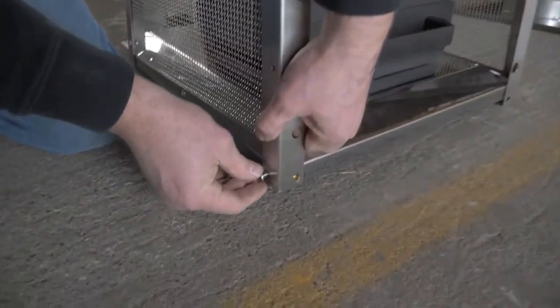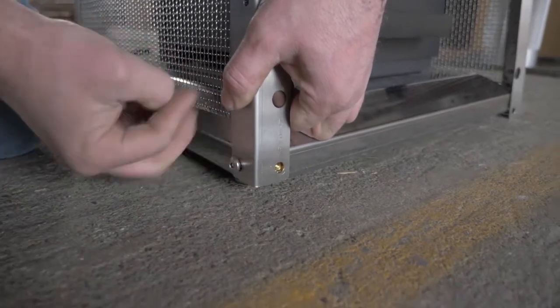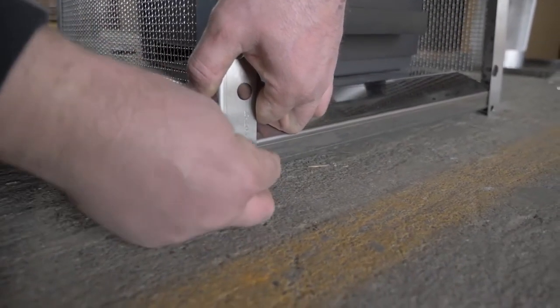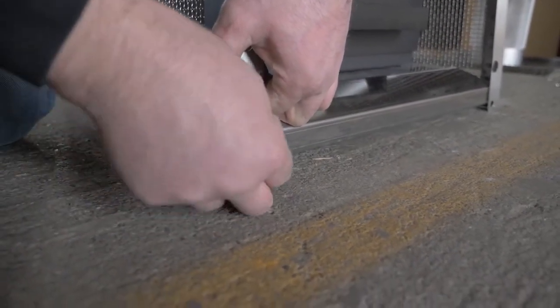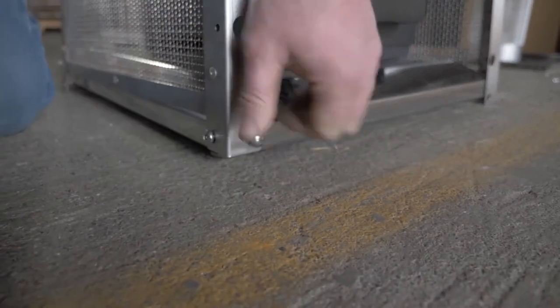Next attach the bottom of the Elite Cage to the bottom base of the patio heater using quarter 20 by half inch bolts.